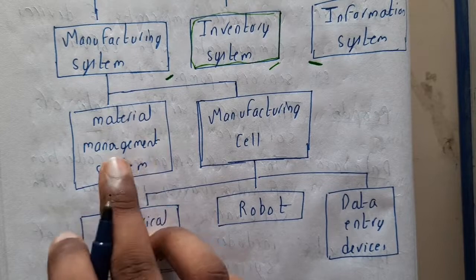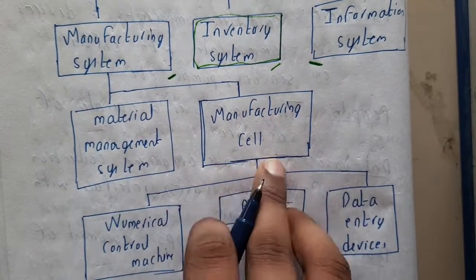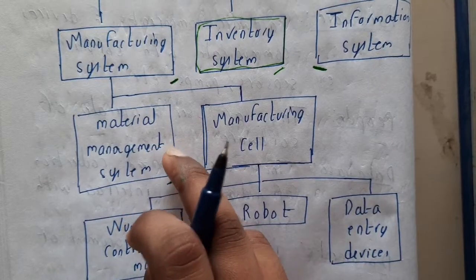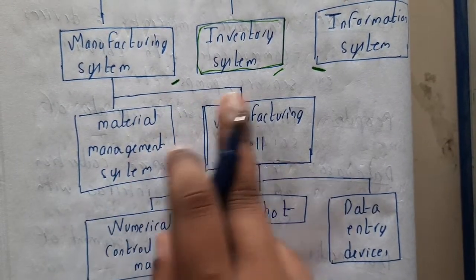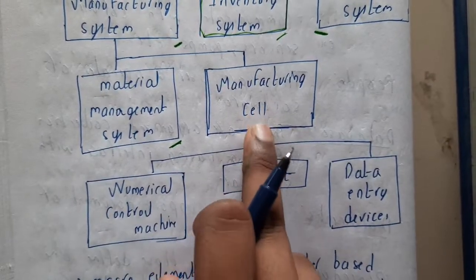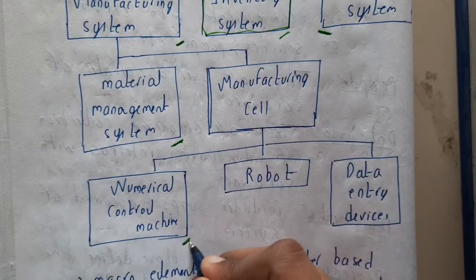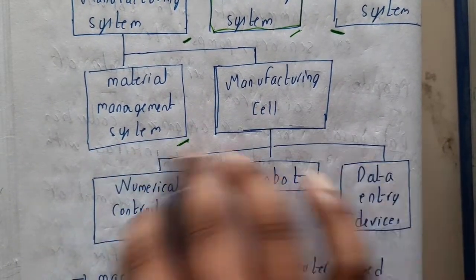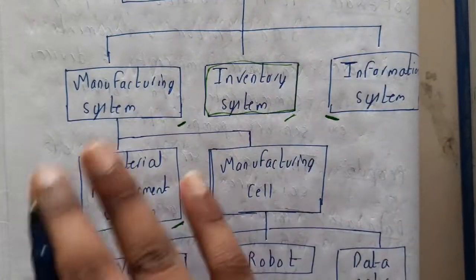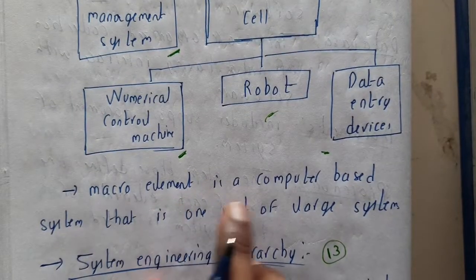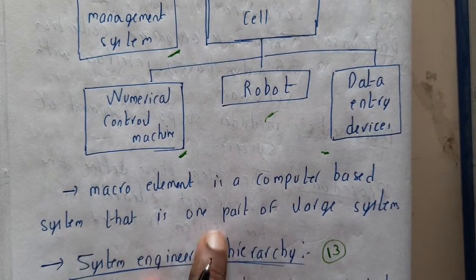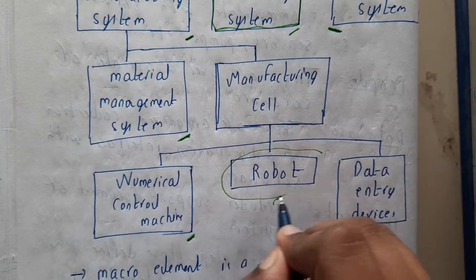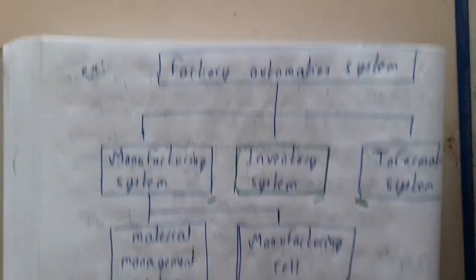In the manufacturing part of automation, we have a material management system and a manufacturing cell. The material management system is where all materials are stored and managed. The manufacturing cell is where the actual operations occur — it contains controlling machines, robots, and data entry devices that perform the operations.